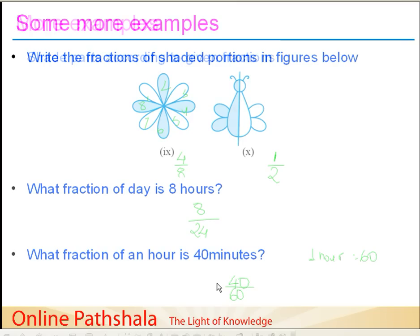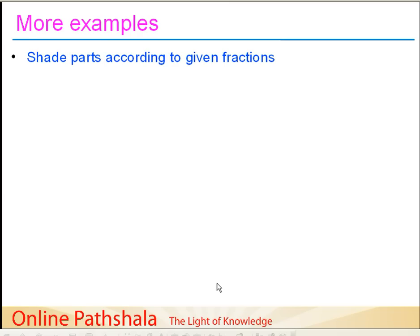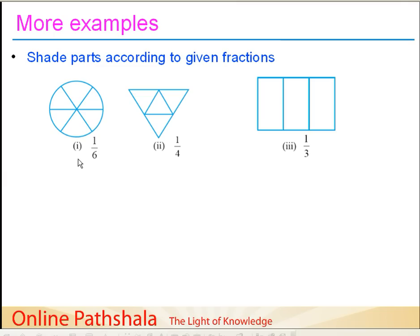Now let's do it the other way: given a fraction, we need to shade the parts. For 1 by 6, we shade 1 part from the 6 parts — you can choose any one. For 1 by 4, we shade 1 part out of 4 parts — again, you are free to choose any one. For 1 by 3, we consider 1 part among 3 and shade it. So this will be my 1 by 3.